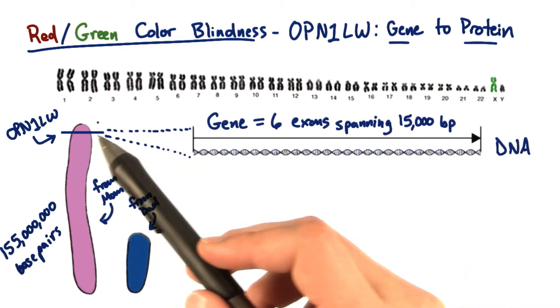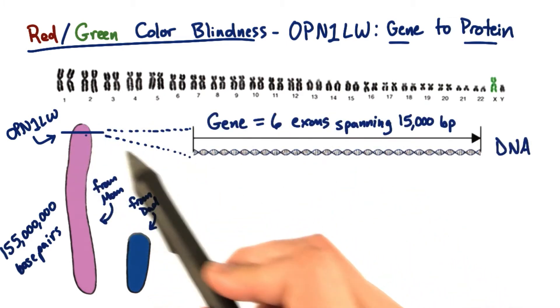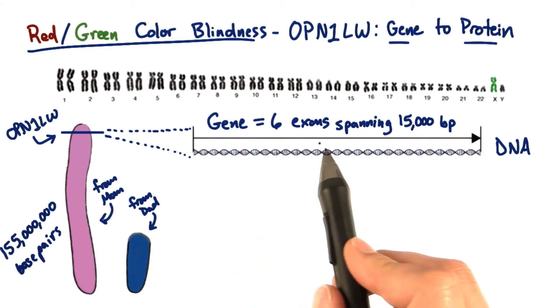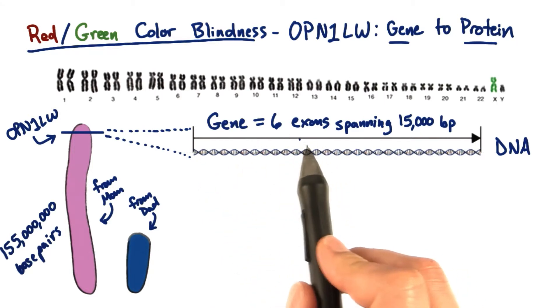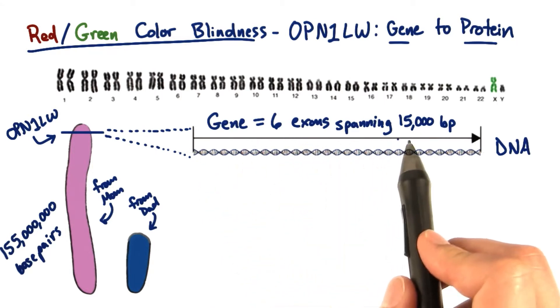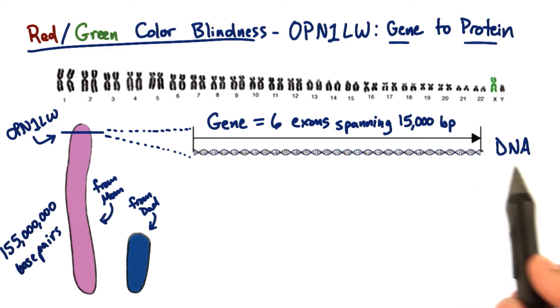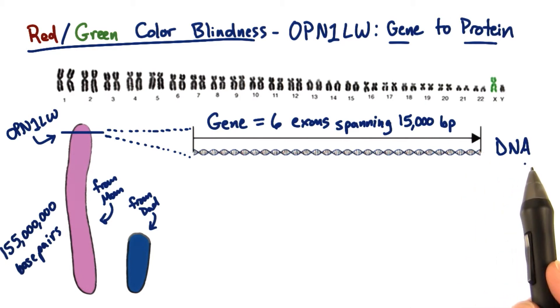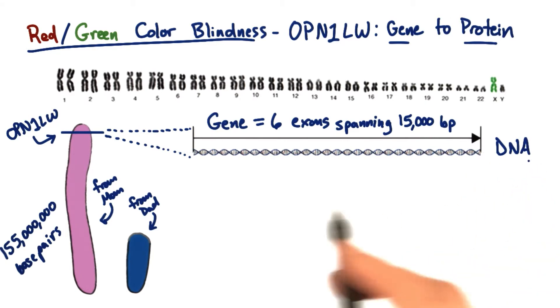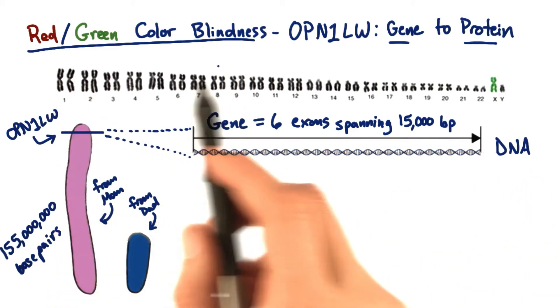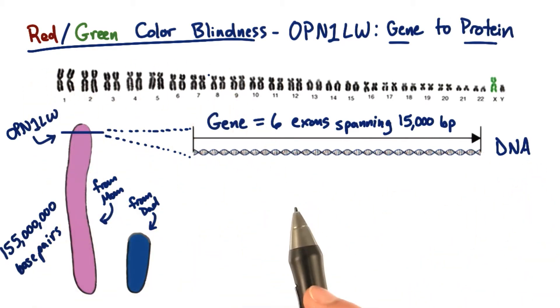The OPN1LW gene is a gene with six exons on the X chromosome, spanning about 15,000 base pairs of DNA, and it has an allele that's associated with red-green color blindness.